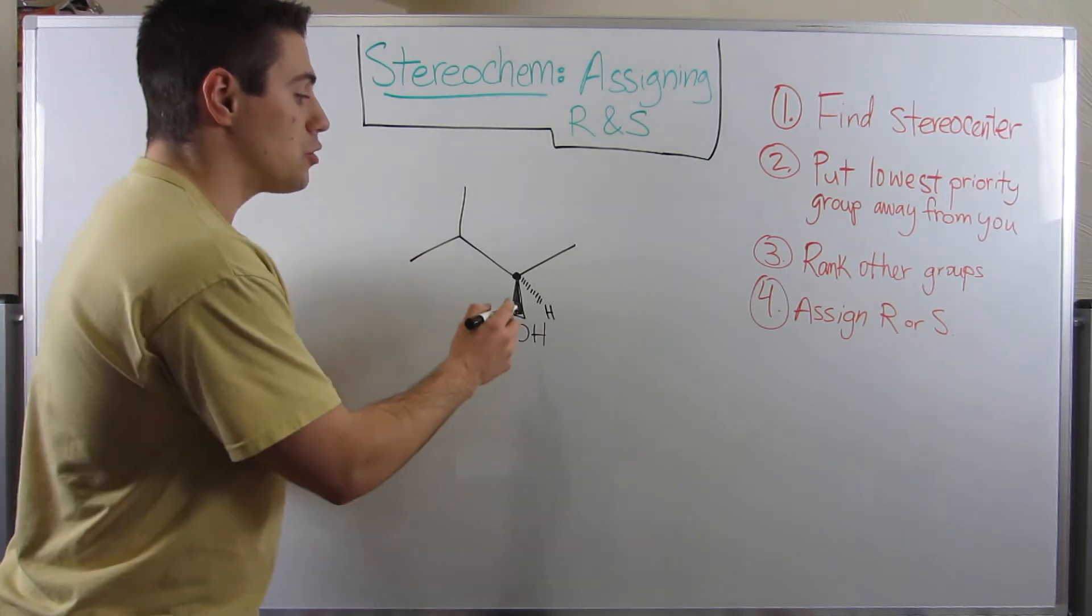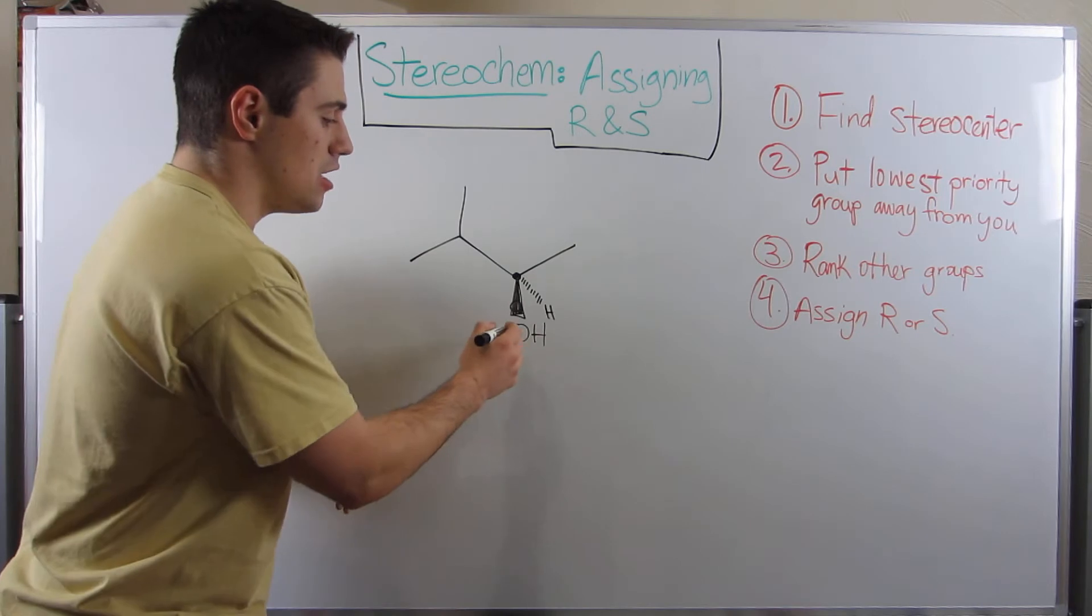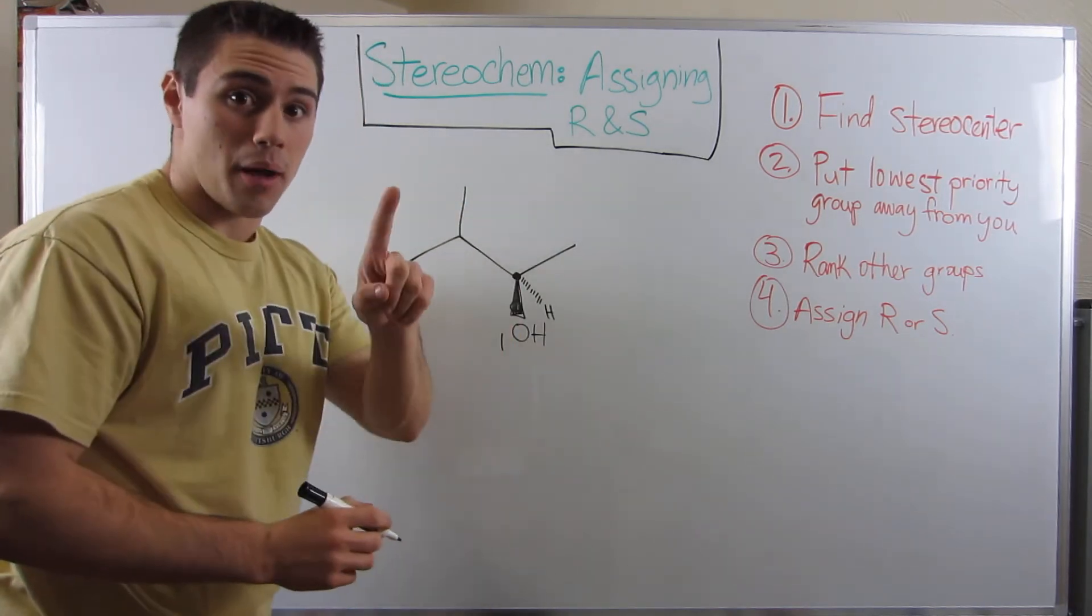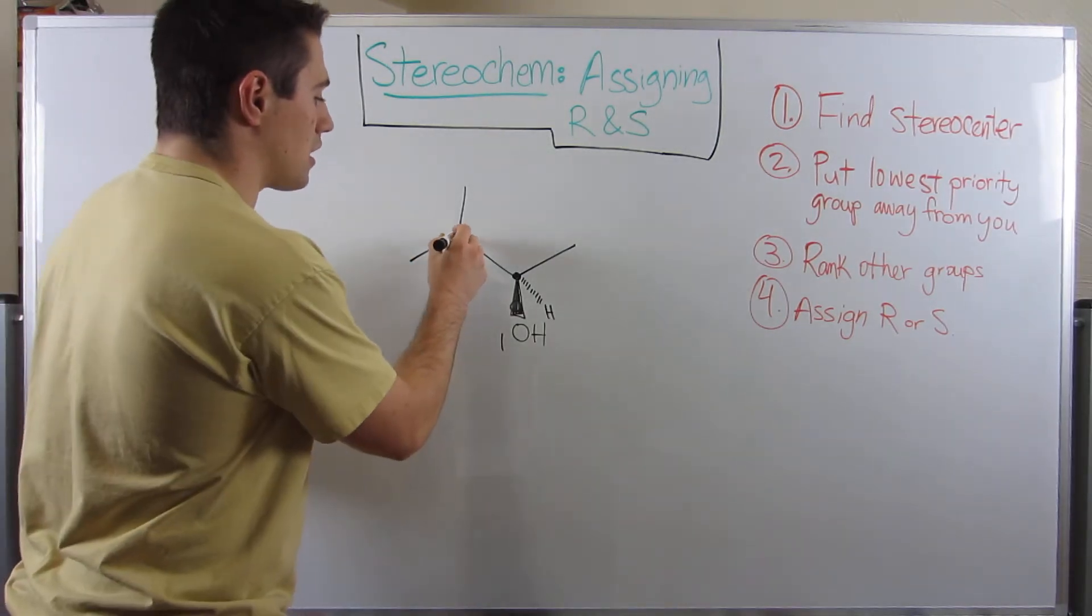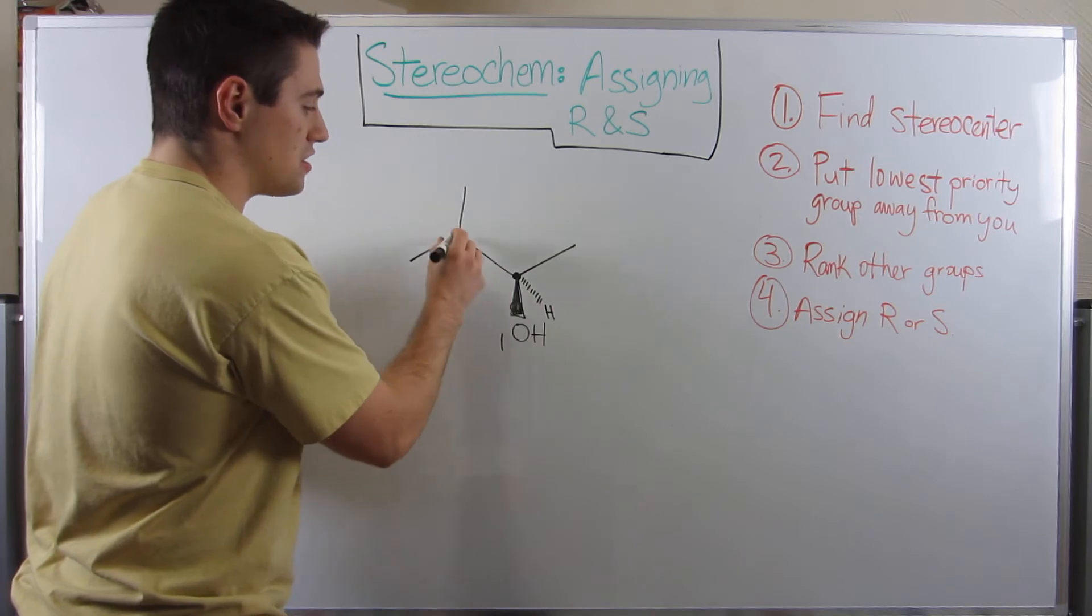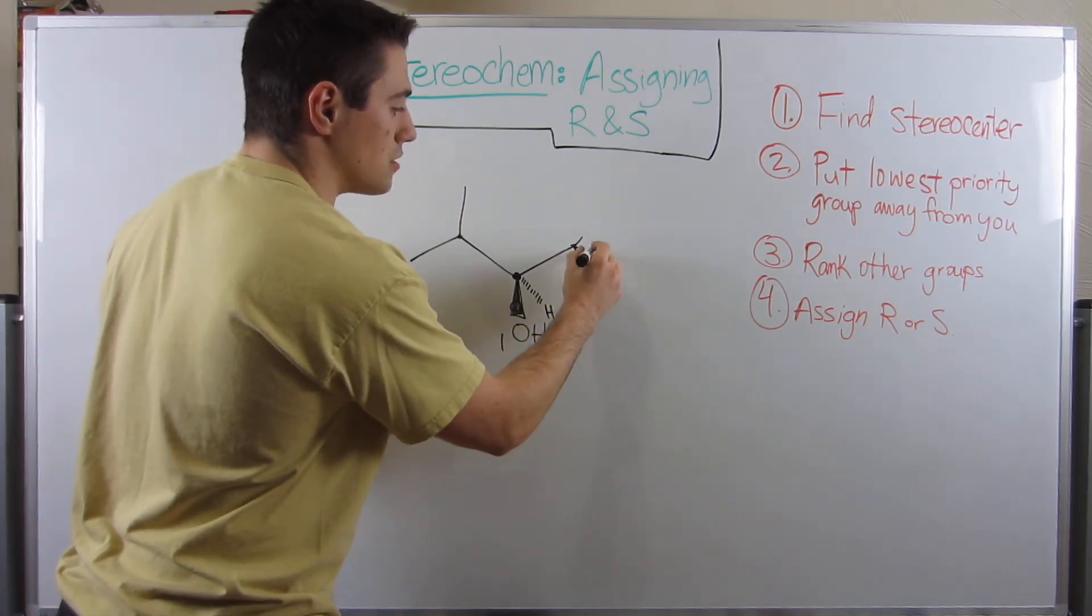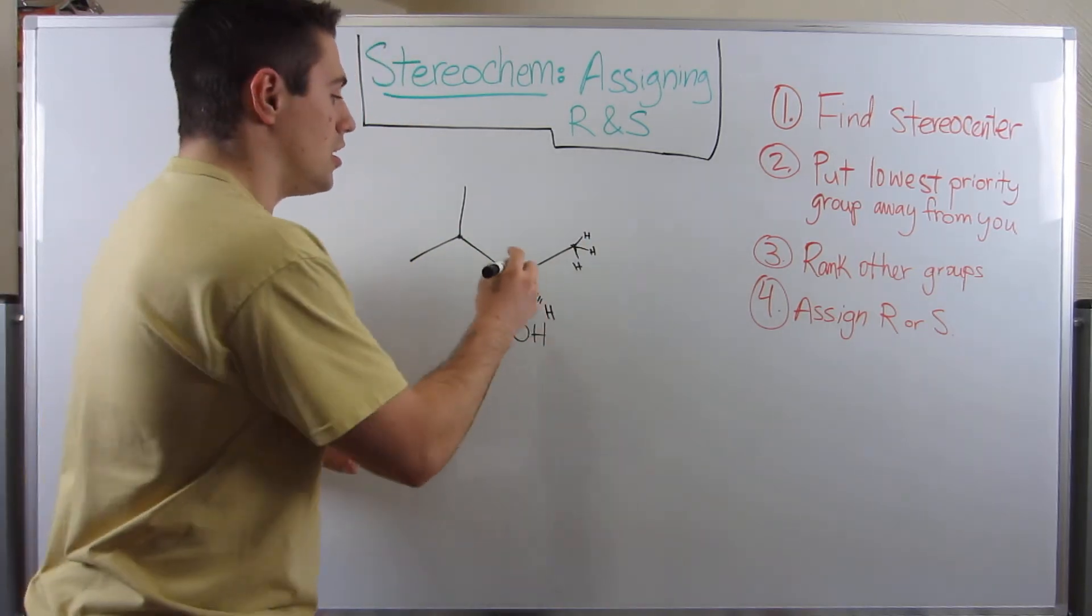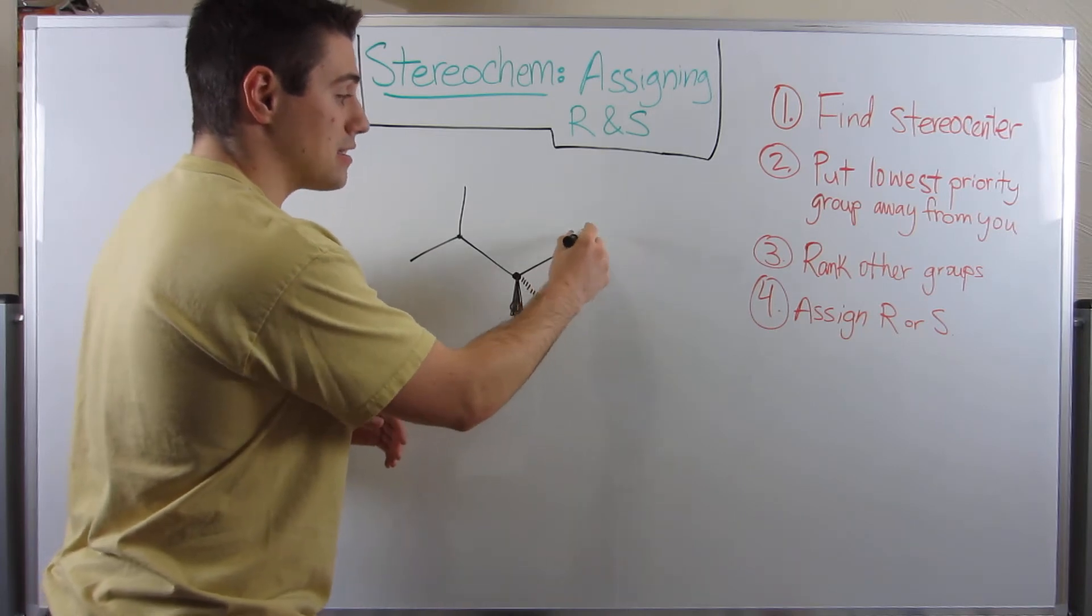So now let's kind of assign priority. Due to molecular weight, you look at the atom directly attached off of the stereocenter. So out of all of these, this OH is easily top priority. Now we kind of have a little bit of a tie. Because if we look at this carbon straight off the stereocenter in this methyl group, they're both carbons. So what do we do? Well, here's how you kind of break a tie. You look at where you've tied and then you look to see what that atom is attached to.